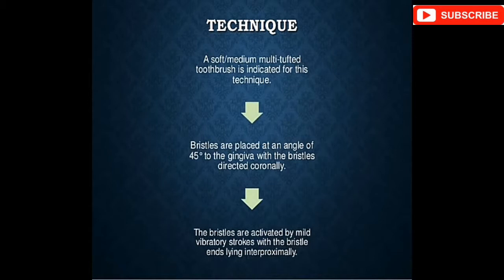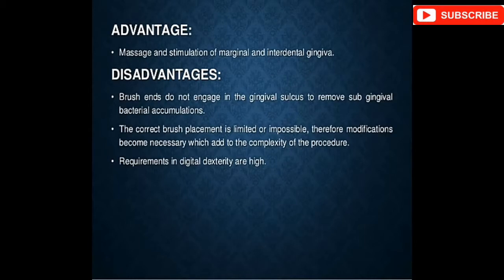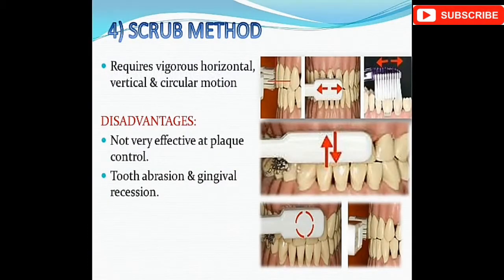The Charters technique uses a soft, medium, multi-tufted toothbrush. Bristles are placed at 45 degrees to the gingiva, directed coronally, then activated by mild vibratory strokes with bristle ends lying interproximally. Advantages: stimulation of marginal and interdental gingiva. Disadvantages: brush ends do not engage the gingival sulcus for sub-gingival bacterial removal, and correct placement is limited. The scrub method requires vigorous horizontal, vertical, and circular motion; its disadvantages are poor plaque control, tooth abrasion, and gingival recession.